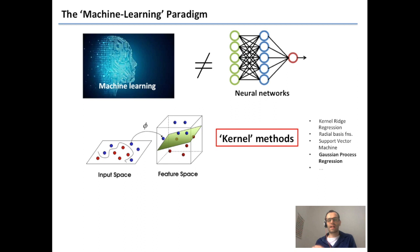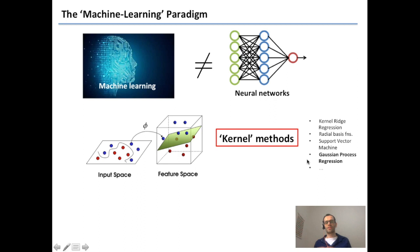The umbrella of kernel methods includes a number of sub-methods, including kernel ridge regression, radial basis functions, support vector machines, and Gaussian process regression — which is the one we'll be focusing on today, because it has a very strong statistical framework that is very useful for devising algorithms to optimize these models.